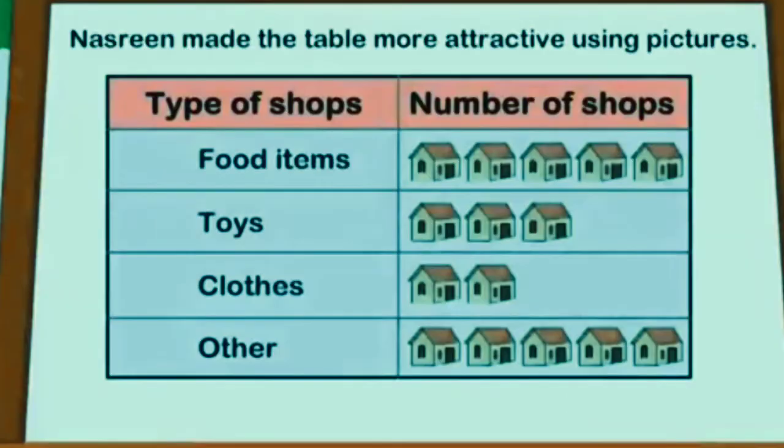Nasrin thought, 'Can I make this table more attractive using pictures?' Yes! He made the table more attractive using pictures. He used house pictures to represent all types of shops, and drew five pictures in front of food items.